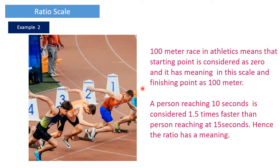Let us look at another example of ratio scale — a 100 meter race. The starting point is zero and the end point is 100 meters. A person finishing in 10 seconds is considered 1.5 times faster than a person finishing in 15 seconds. Hence the ratio in this case has a meaning and makes sense.